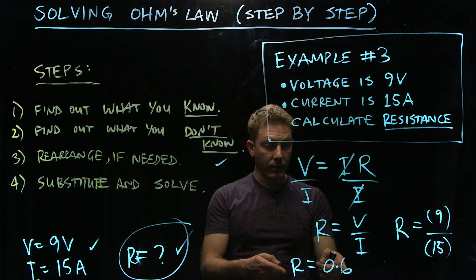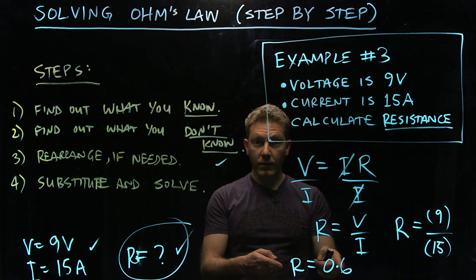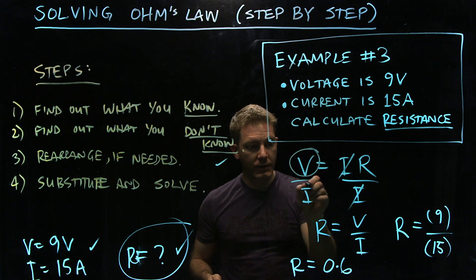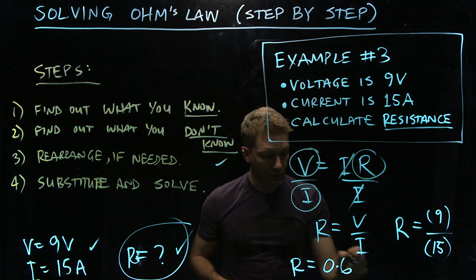0.6 what? Do you remember? Ohms, because if this is volts and this is amps, then this has to be ohms.